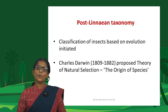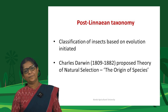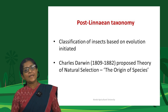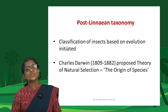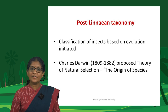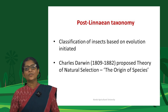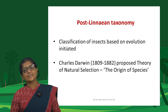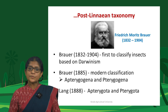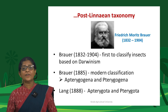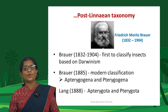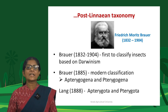In the post-Linnaean era, classification of insects based on evolution was initiated, largely with the efforts of Charles Darwin, who proposed the theory of natural selection in The Origin of Species. Brauer was the first to classify insects based on Darwinism and laid the foundation of modern insect classification.